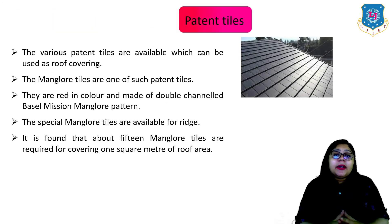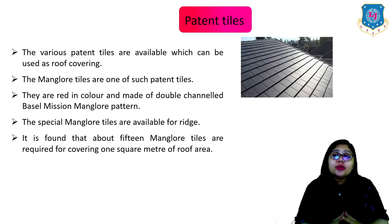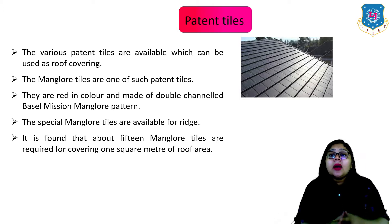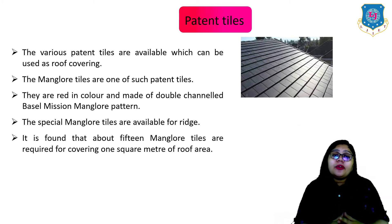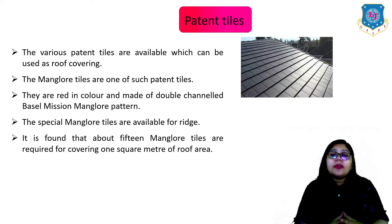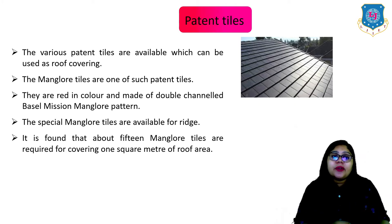Next is the patent tiles. Various patent tiles are available which can be used as a roof covering. The Mangalore tiles can be one such patent tile. They are red in color and made of double channeled Mangalore pattern. Special Mangalore tiles are also available for the ridge. It is found that about 15 Mangalore tiles are required for covering one square meter of roof area.